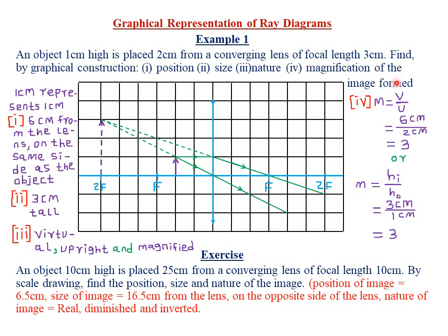The image is also magnified because it is larger than the original object. For magnification, we use magnification equals image distance divided by object distance. The image distance is six centimeters and the object distance is two centimeters, so magnification equals six divided by two, which gives three. Magnification is a ratio and therefore has no units. It can also be found by height of the image divided by height of the object: three centimeters divided by one centimeter also gives a magnification of three.